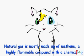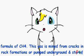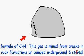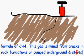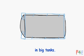Natural gas is mostly made up of methane, a highly flammable compound with a chemical formula of CH4. This gas is mined from cracks and rock formations that are pumped underground and stored in big tanks.